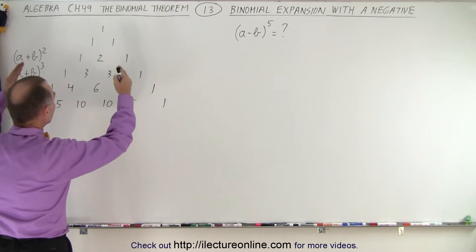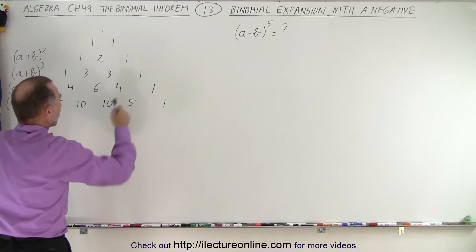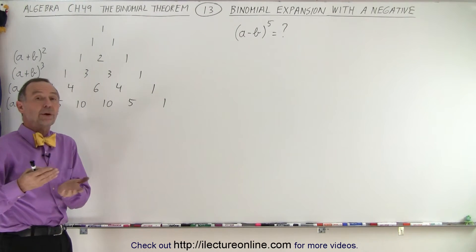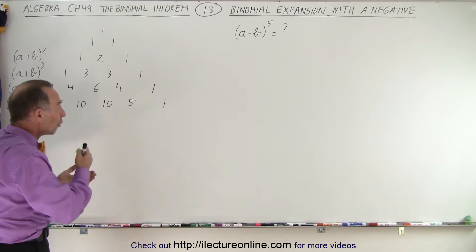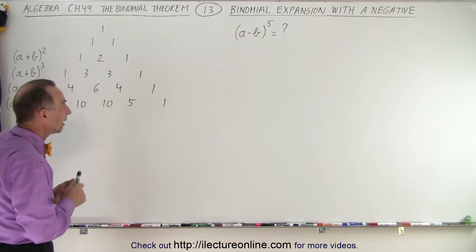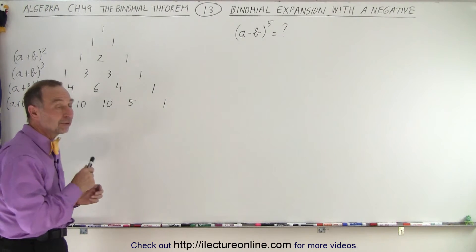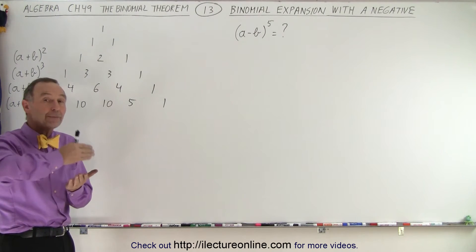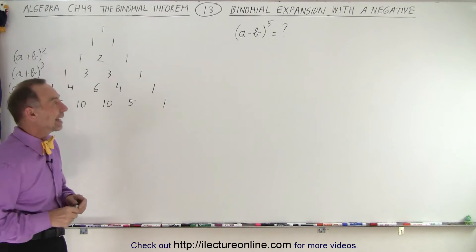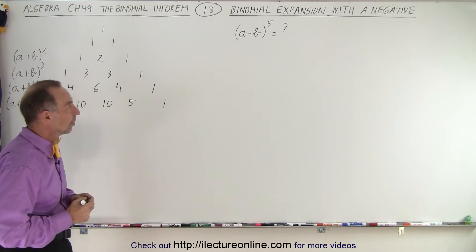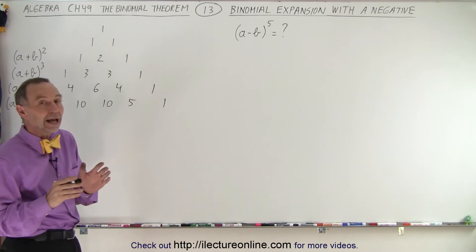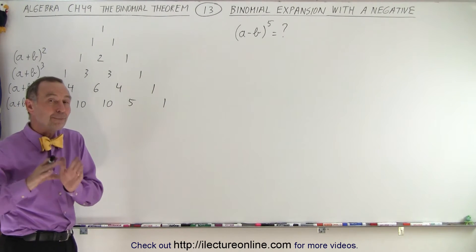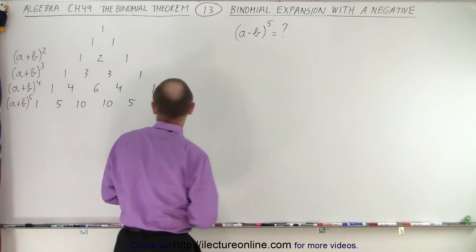We still want to use Pascal's triangle or the method where we use the factorials to find the coefficients, except when it comes to the sign we will have alternating plus and negative signs. So let's write it out as if we had a plus b to the fifth power.